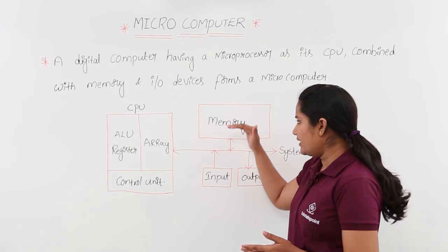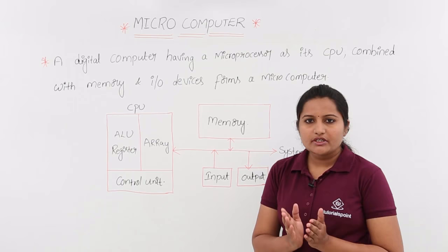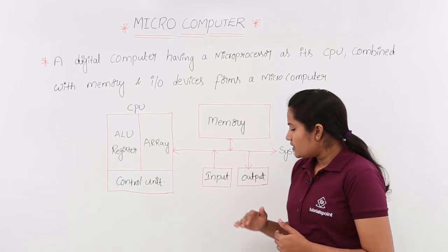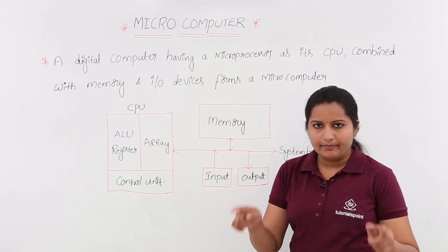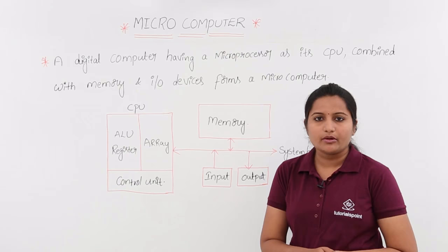Coming to input: an input device is one which gives input to the computer. As an example, we can take a keypad — for any computer you can see a keypad, which may be one of the input devices. We also have an output device like a monitor, from which we can take the output signal from the computer.